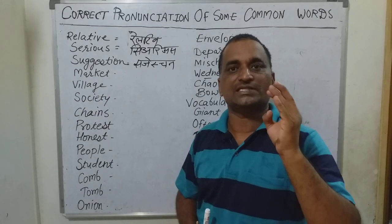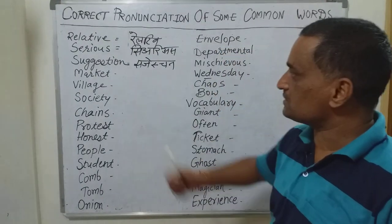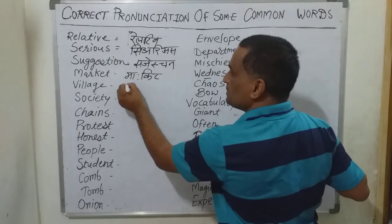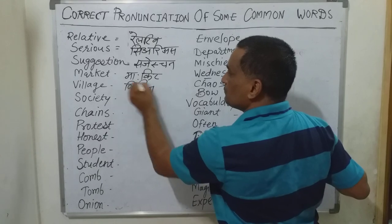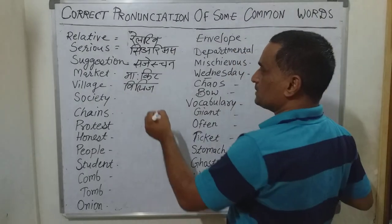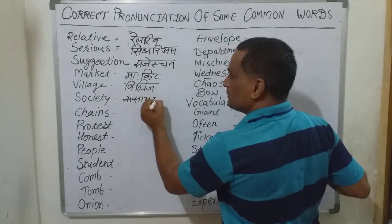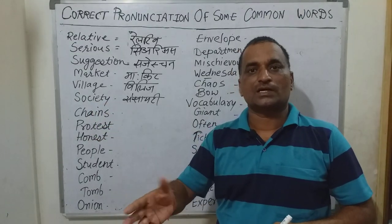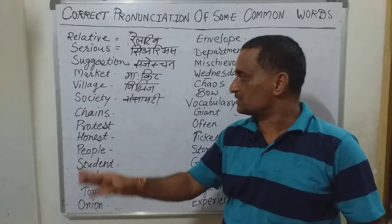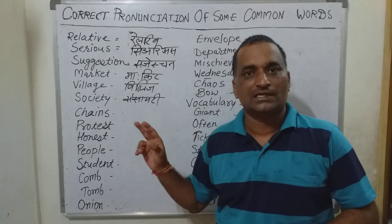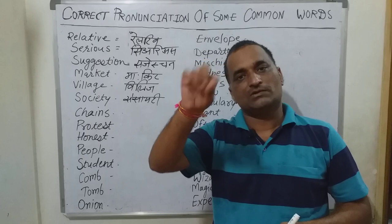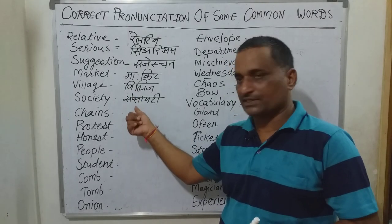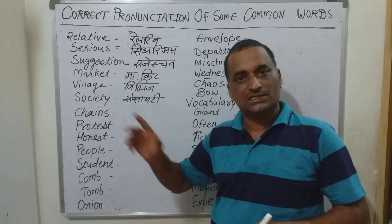The next word is 'market' — not 'market,' but 'market.' The next is 'village.' You will have to improve your English by improving its correct pronunciation — 'village.' And the next is 'society.' You will have to use proper stress on the proper syllable: 'society' — the stress falls correctly on 'so-CI-ety.' So pay attention to where the stress comes when you pronounce each word.